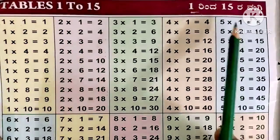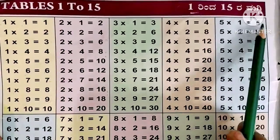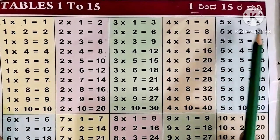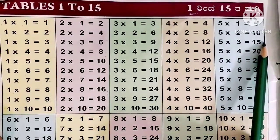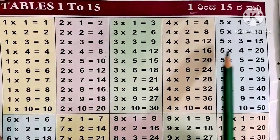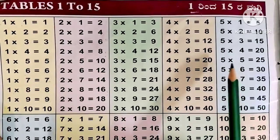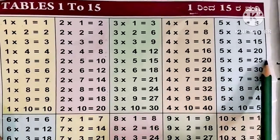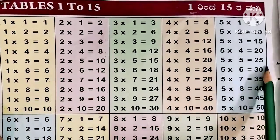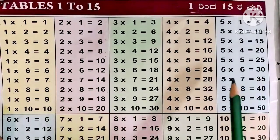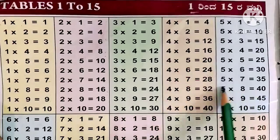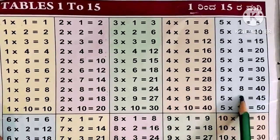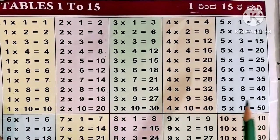4 tens are 40. Now 5 ones are 5, 5 twos are 10, 5 threes are 15, 5 fours are 20, 5 fives are 25, 5 sixes are 30, 5 sevens are 35, 5 eights are 40, 5 nines are 45.